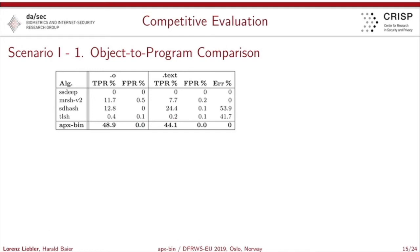Then we started the competitive evaluation. In the first scenario — object-to-program comparison — APXPIN clearly outperforms most of the competitors. However, we also struggled to outperform a true positive rate of 50%; only by accepting some false positives could we cross this line. Among other approaches, TLSH struggles with extremely small files, while SDHash showed very solid performance in this case.